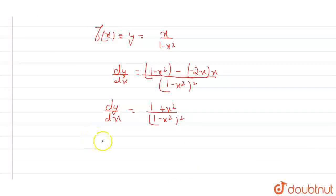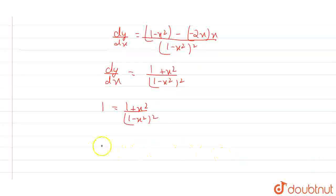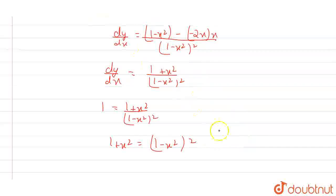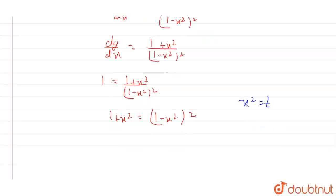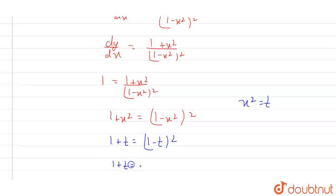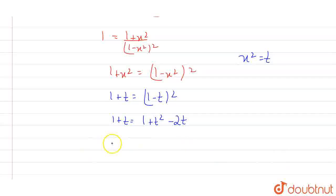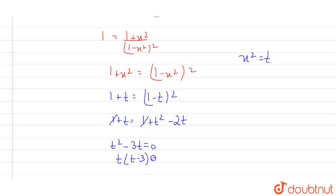So it becomes: 1 + x² = (1 - x²)². We will take x² as t to simplify this equation, so we can write it as 1 + t = (1 - t)², which becomes 1 + t = 1 + t² - 2t. The equation we receive is t² - 3t = 0, which factors as t(t - 3) = 0.